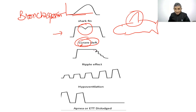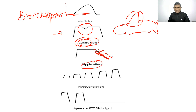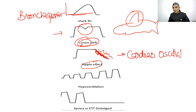The ripple effect, also known as cardiac oscillations, appears as undulations at the end of expiration and the inspiratory part of the capnograph. This graph is seen in thin patients and pediatric patients.